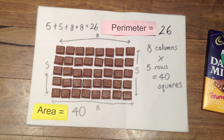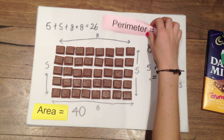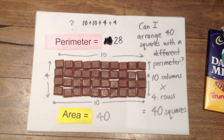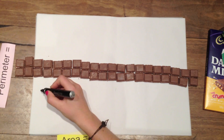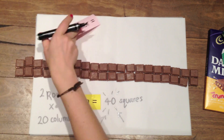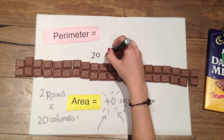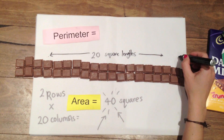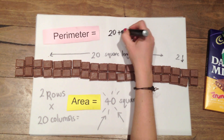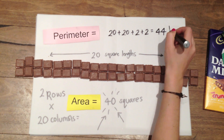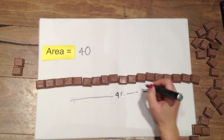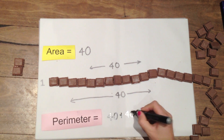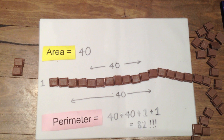So my first arrangement gave me an area of 40 but a perimeter of 26, and my second arrangement also had 40 squares but this time it gave me a perimeter of 28. What if I arranged the squares again into two rows of 20 columns? Again, I have an area of 40 squares, but this time I have a new perimeter which equals 44. Arranging the squares into one row of 40 columns is so long that I can't even fit it onto the page. I still have an area of 40, but this time I have a perimeter of 82.